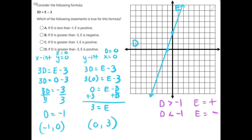If we look at answer choice A, that says if D is less than negative 1, E is positive. Well, we actually have part of that statement here. When D is less than negative 1, E should be negative, not positive. So A is incorrect.